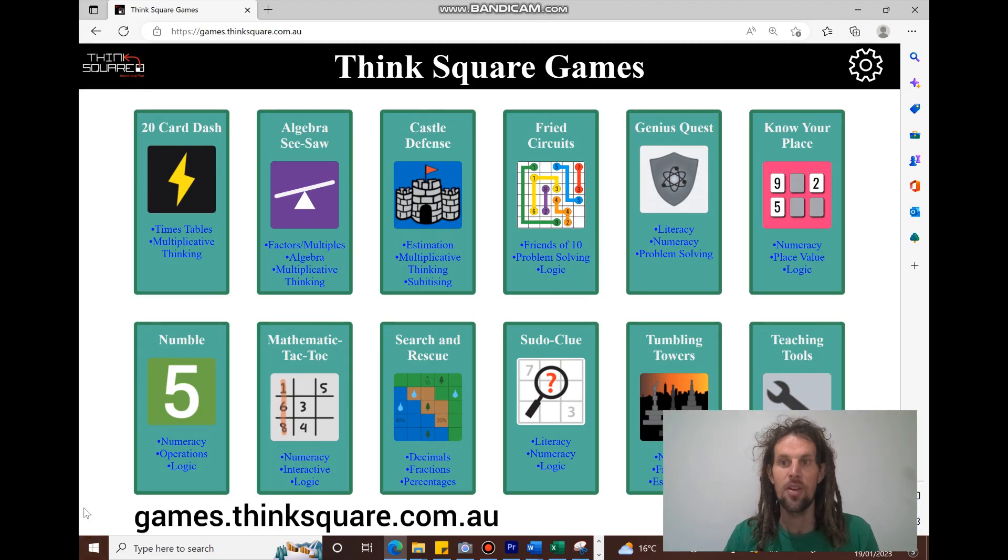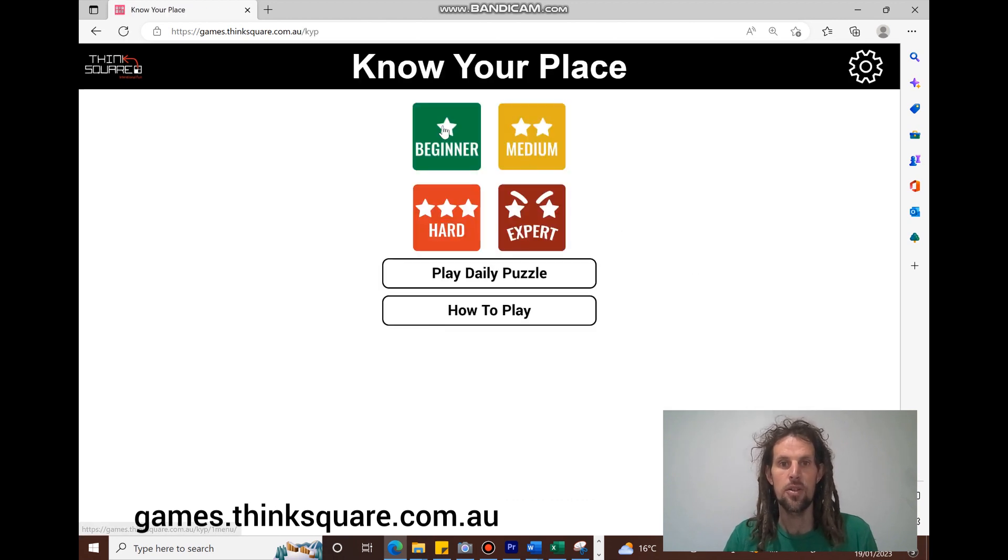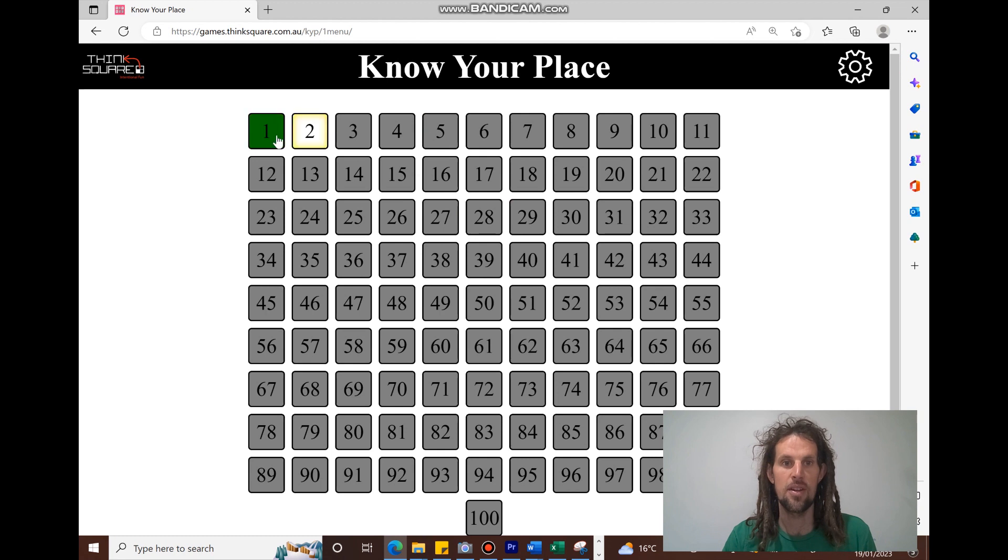Head to games.thinksquare.com.au, and then click the Know Your Place icon here in the top right. And you'll get to choose, if you're logged in, from 4 different difficulty levels. There's 100 puzzles at each of these levels.